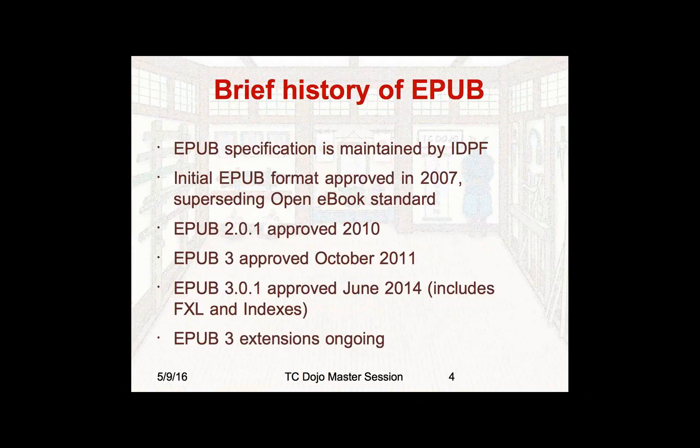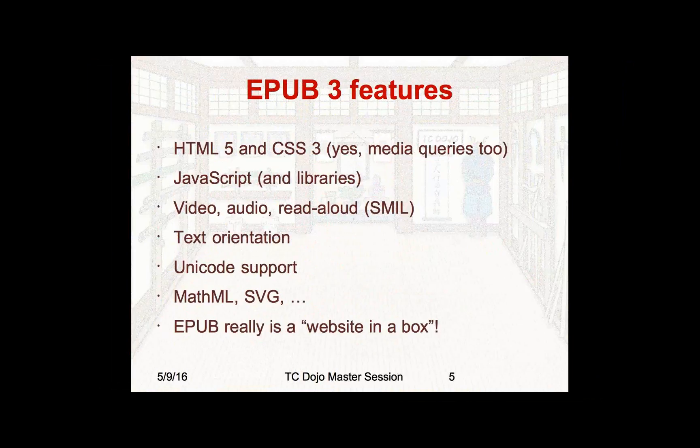Some of the great features in EPUB 3 are — the main thing is the fact that it's based on HTML5 and CSS3, which gives you a huge amount of features and power, and that does mean you can use media queries as well. So if you know about responsive design, you can implement that in an EPUB. You can use JavaScript and JavaScript libraries like jQuery to manipulate the structure of the EPUB being displayed. You can have video, audio. There's a read-aloud format called SMIL. It supports all text orientations, Unicode support, MathML, SVG.